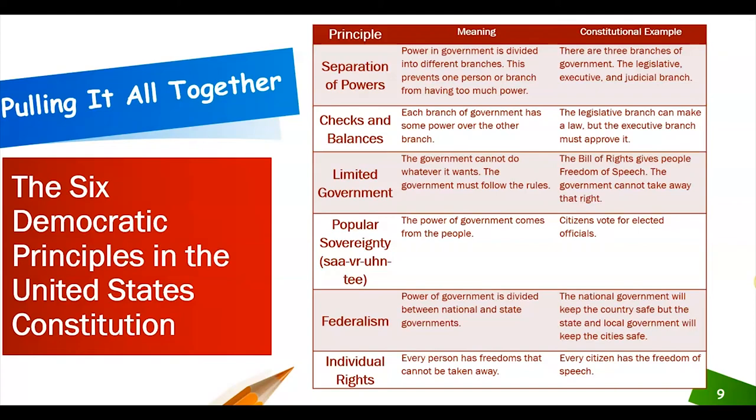Popular sovereignty: the power of government comes from the people — citizens vote for elected officials. Federalism: power of government is divided between national and state governments. For example, the national government will keep the country safe, but the state and local government will keep the city safe.